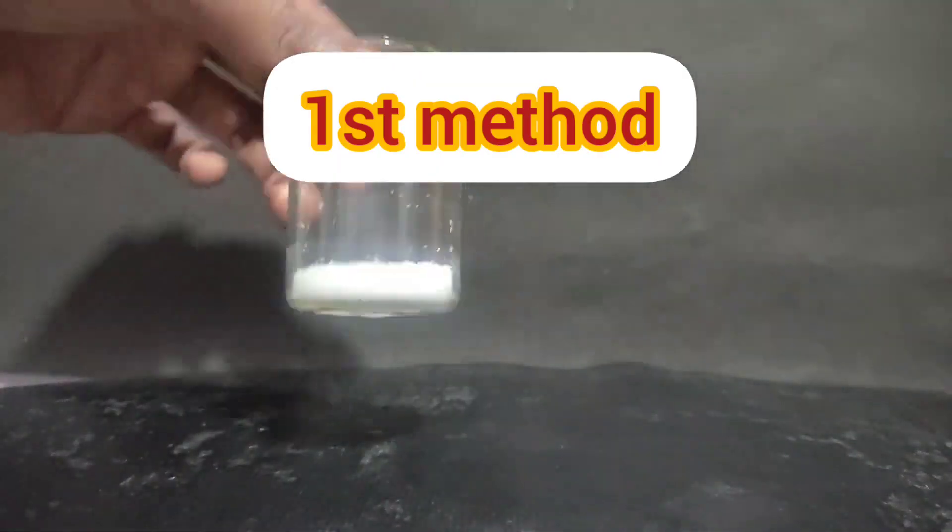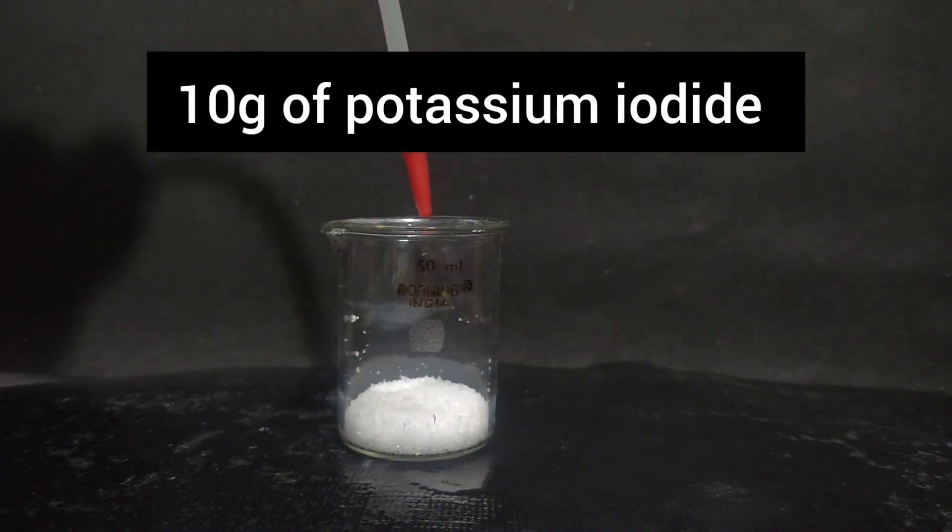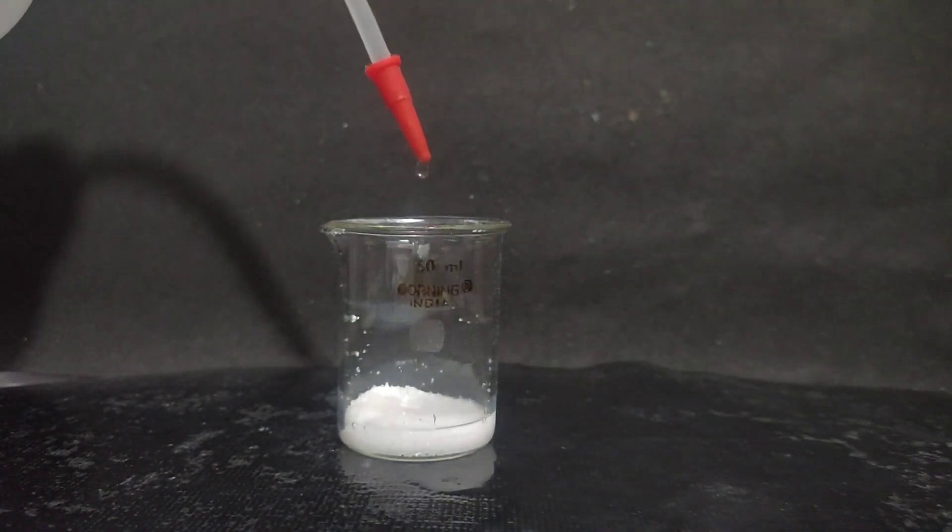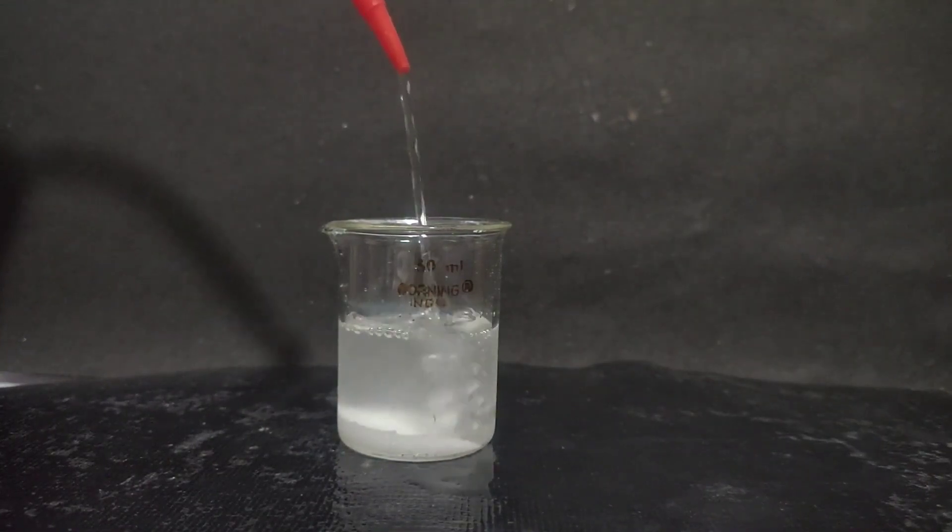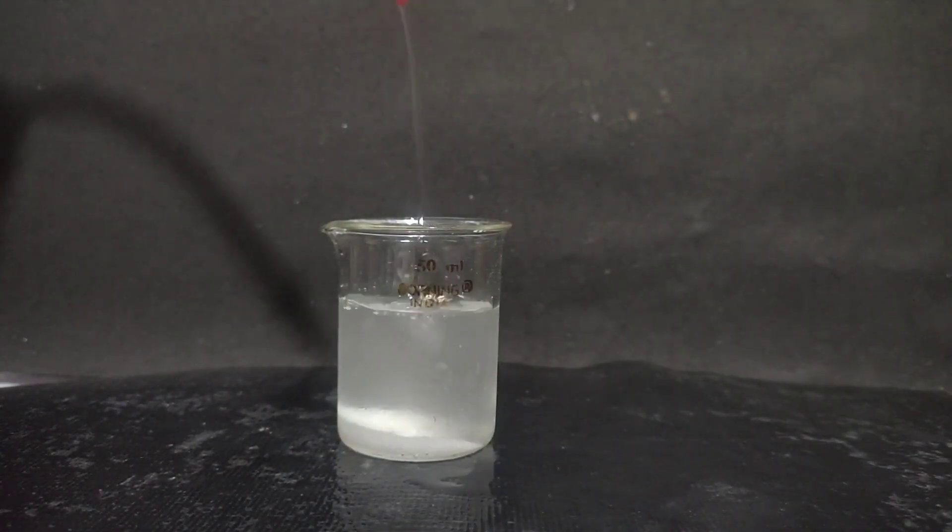To start things off, I took 10 grams of potassium iodide in a 50ml beaker and added 30-40ml distilled water to it. Potassium iodide has a high solubility, so everything dissolves quickly.